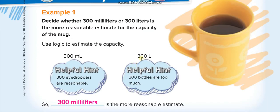300 liters means 300 bottles - huge! And 300 milliliters like 300 eyedroppers, so you can fill this one. So the reasonable estimate for this mug is 300 milliliters.